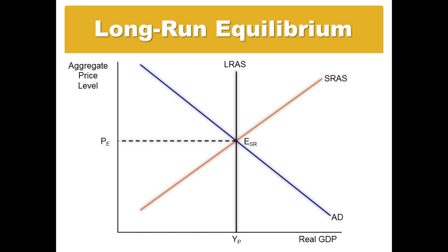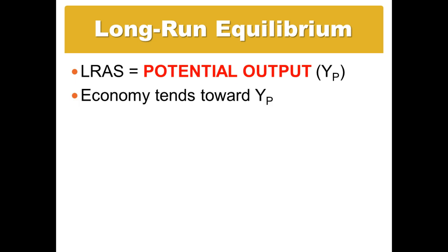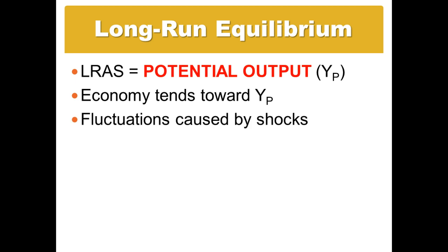That's where the economy tends to want to be on its own unless some sort of external or internal force acts upon it, causing a shift in either supply or demand. Long run aggregate supply is where we have potential output, where we're at full employment and producing when all of our resources are being used efficiently. The real economy tends toward potential output, but it usually fluctuates given different effects in the market. Changes that cause it to leave long run equilibrium are caused by what we call shocks — either demand shocks or supply shocks.